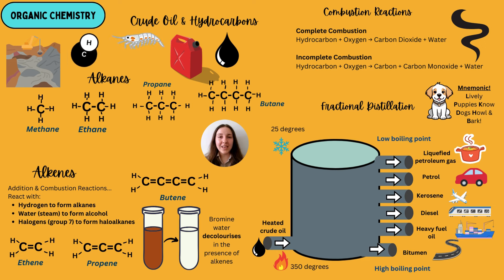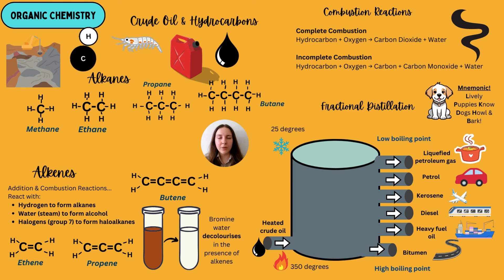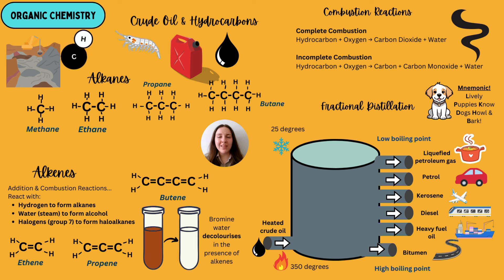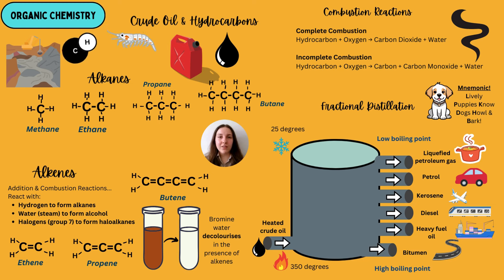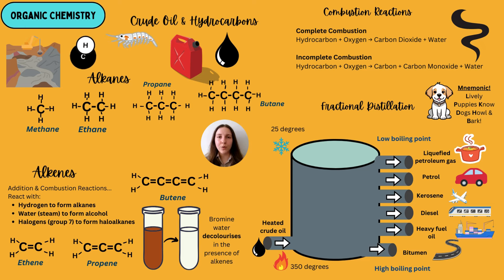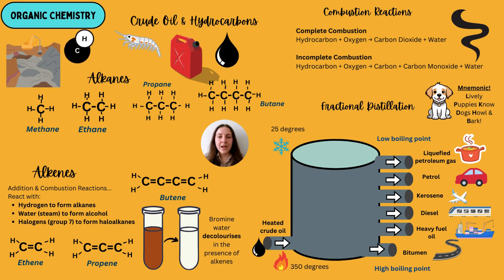An alkene is still a hydrocarbon, but it has a carbon–carbon double bond. Because of that double bond you need at least two carbon atoms — so there's no such thing as methane in alkenes; it starts with ethene (two carbons), then propene, then butene. This is called an unsaturated hydrocarbon. We can identify alkenes from alkanes by using bromine water — in the presence of an alkene, bromine water will decolourise from its brownish-orange colour to colourless.